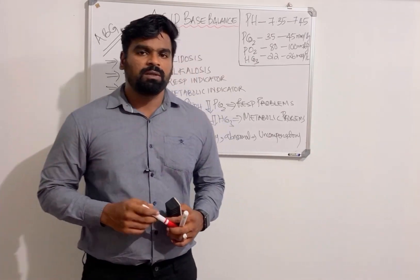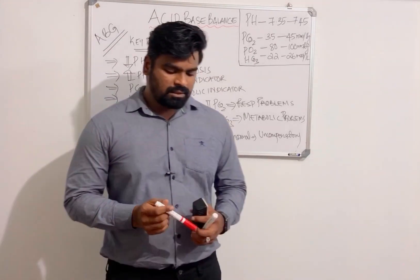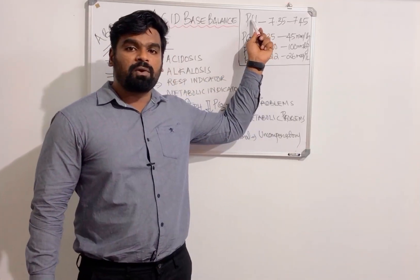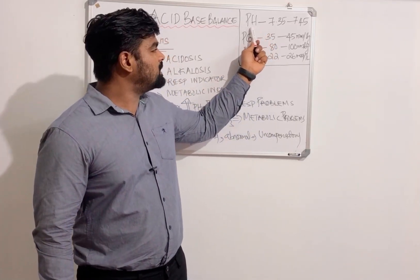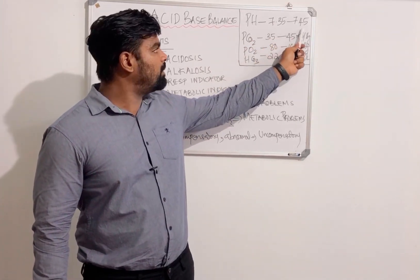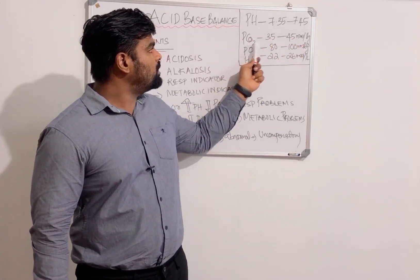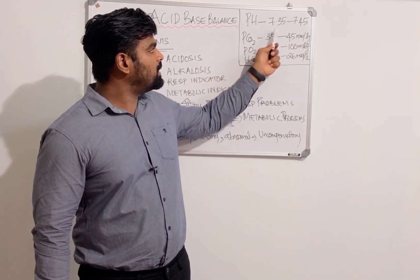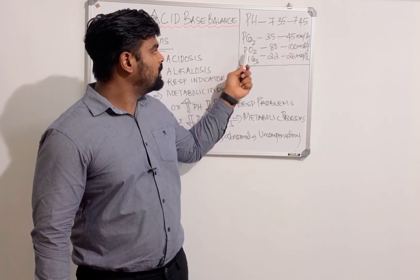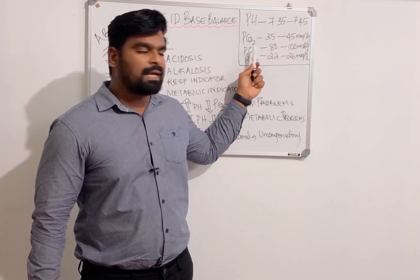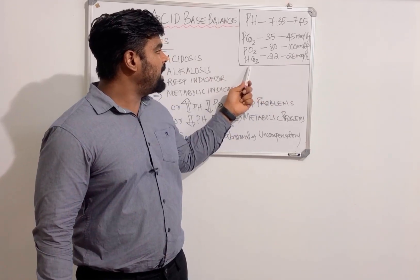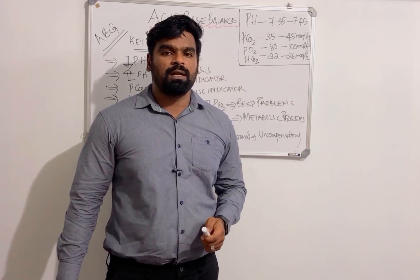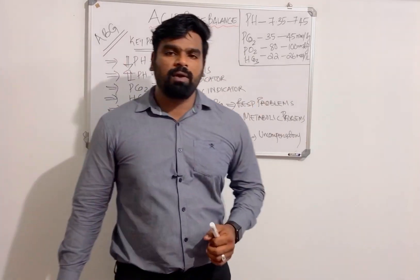To study ABG, you need to know some normal values. pH — the full form is Power of Hydrogen — normal pH is 7.35 to 7.45. pCO2 is 35 to 45 mmHg. To remember pCO2, put down 3.5 and 4.5. pO2 is 80 to 100 mmHg. Bicarbonate (HCO3) is 22 to 26 mEq per liter.